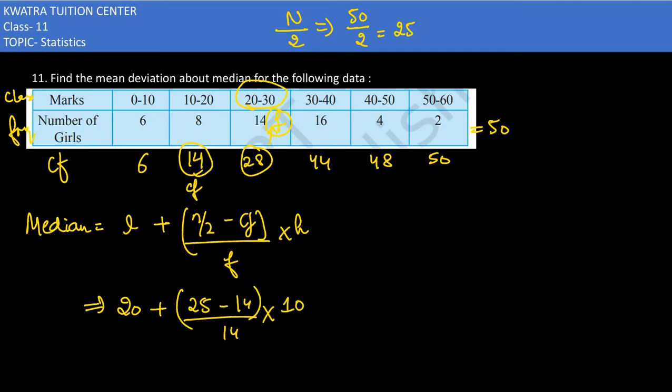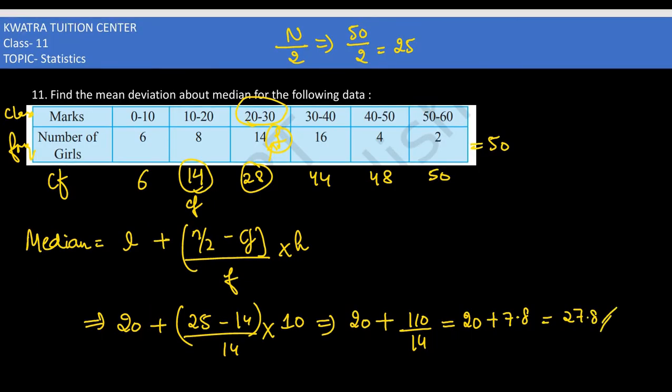The gap between the class is 10. The median formula is L plus (n/2 minus cf) divided by f times h. That is 20 plus (25 minus 14) times 10 divided by 14. So dividing 110 by 14, you would get 20 plus 7.8, that is nothing but 27.8. That is the median.